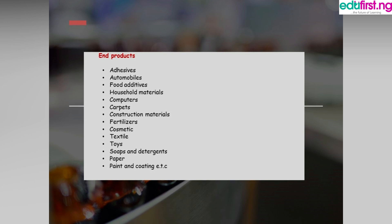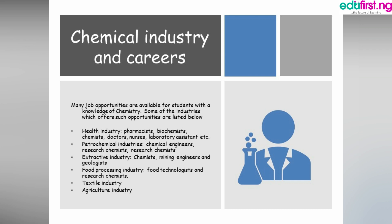We should keep in mind that production always starts from raw materials. The chemical industry is very important in the economy of any nation. One major benefit is that it provides job opportunities — many opportunities are available for students with knowledge of chemistry. Some industries that offer such opportunities include the earth industry, petrochemical industries, extractive industries, food processing, textile, and agricultural industries.